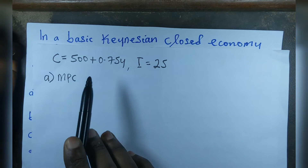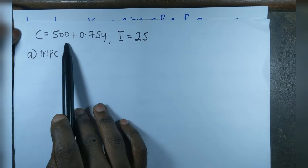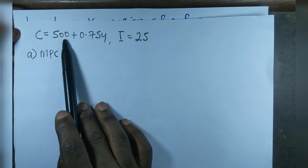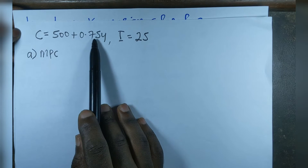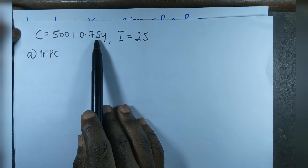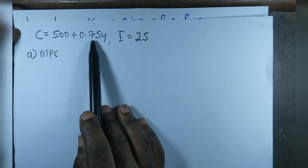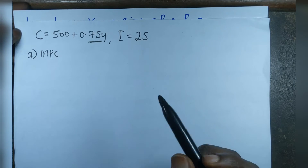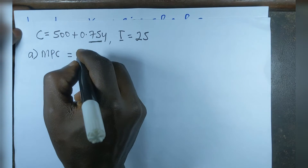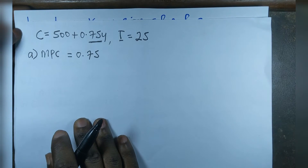The 500 here represents autonomous consumption — consumption that does not depend on income. To get the value of MPC, we take the coefficient of Y in the consumption function, which is 0.75.